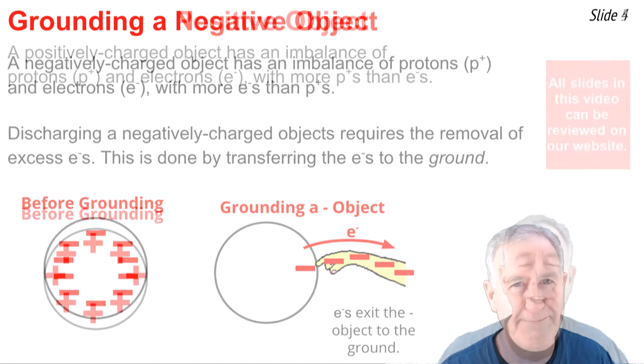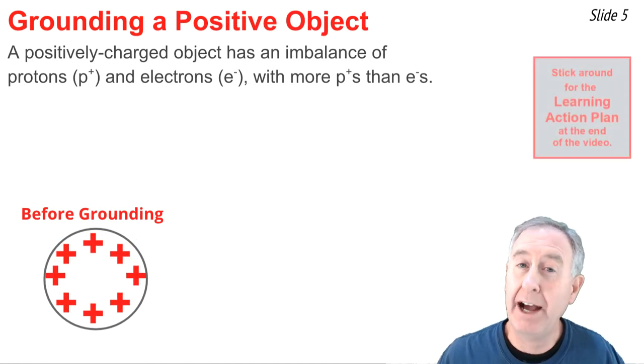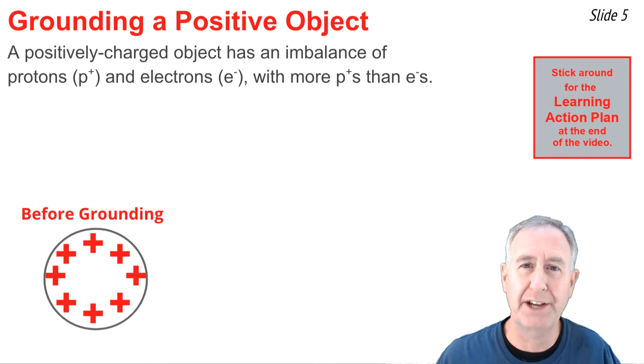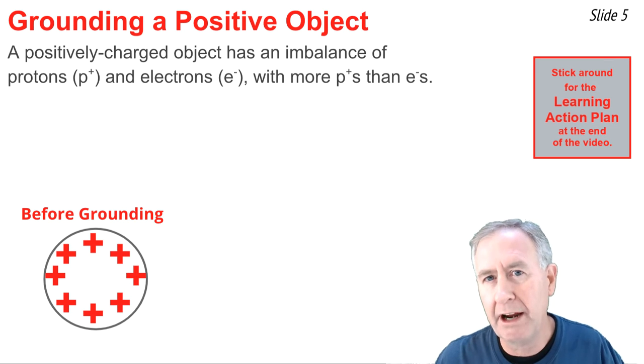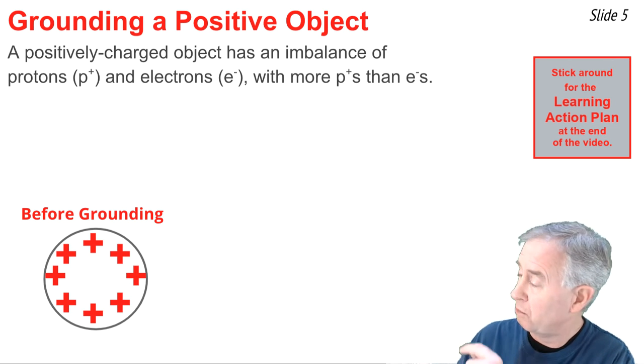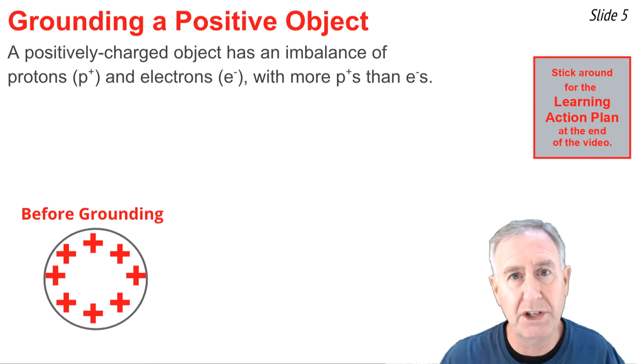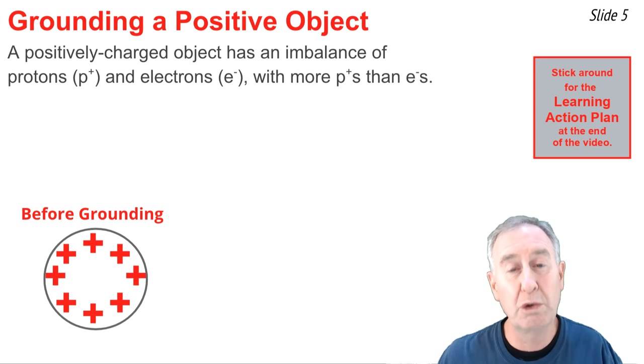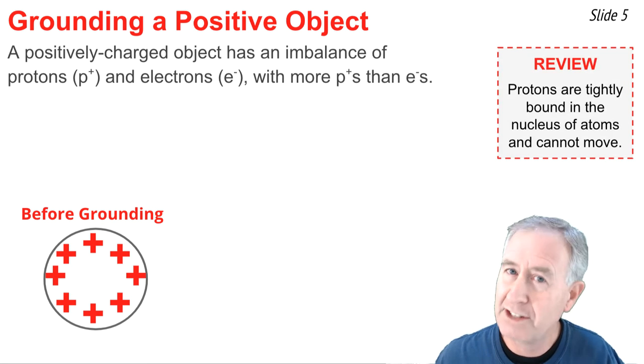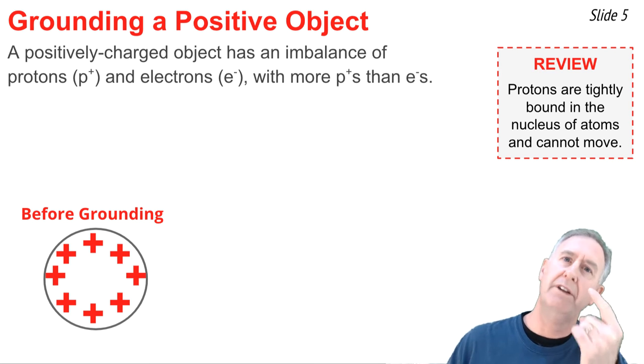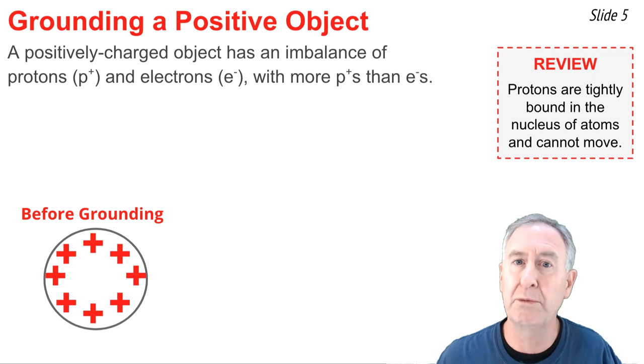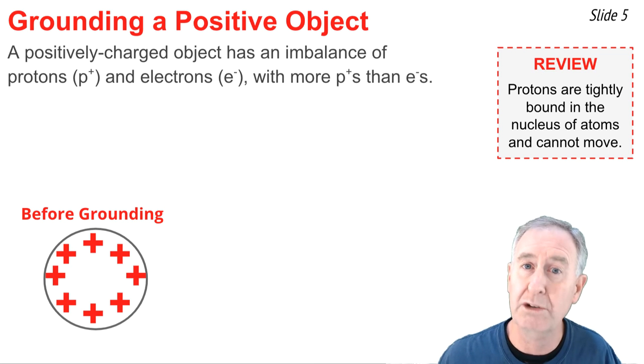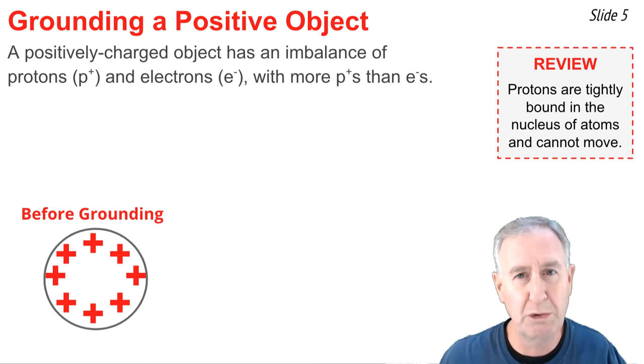In contrast, a positively charged object has an imbalance of protons and electrons with more of the protons than electrons. But you must be careful in explaining how an object with excess positive charge can become grounded. The incorrect explanation is to say that it loses some of its excess protons. But that's not possible because, as we've learned, the protons are bound up in the nucleus of an atom and unable to move as a result of an electrostatic event. Only electrons can do the moving.